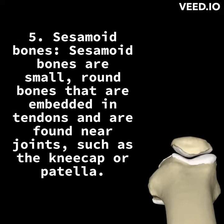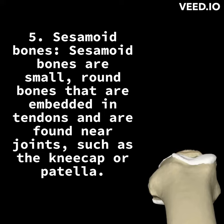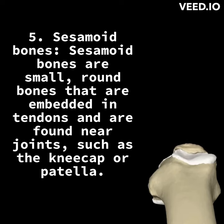5. Sesamoid bones. Sesamoid bones are small, round bones that are embedded in tendons and are found near joints, such as the kneecap or patella.